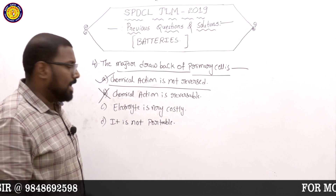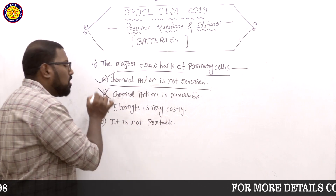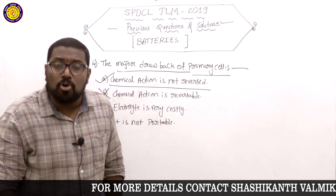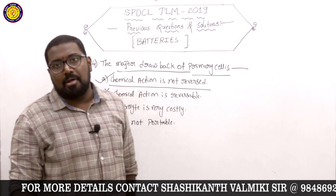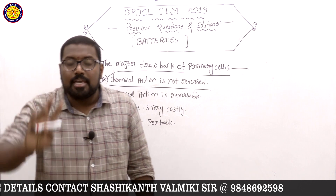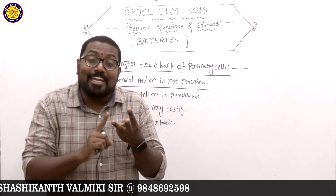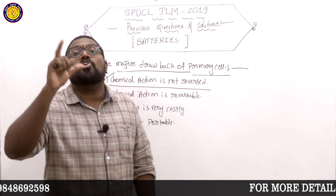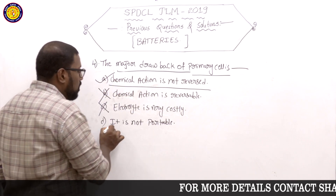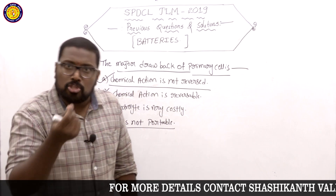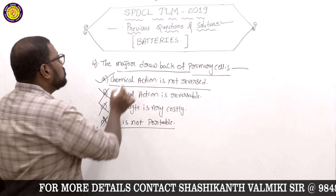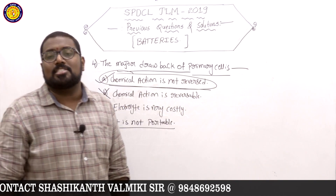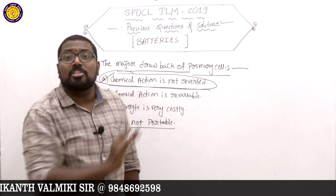Option C — electrolyte is very costly — is wrong, because primary cells are dry cells. There is no liquid electrolyte. Primary cell types include: Volta cell, Leclanché cell, Daniel cell, and dry cells. Secondary cells, like lead-acid cells used in bike batteries, are rechargeable because their chemical action is reversible. If the chemical action were reversible in primary cells, it would make them secondary cells.